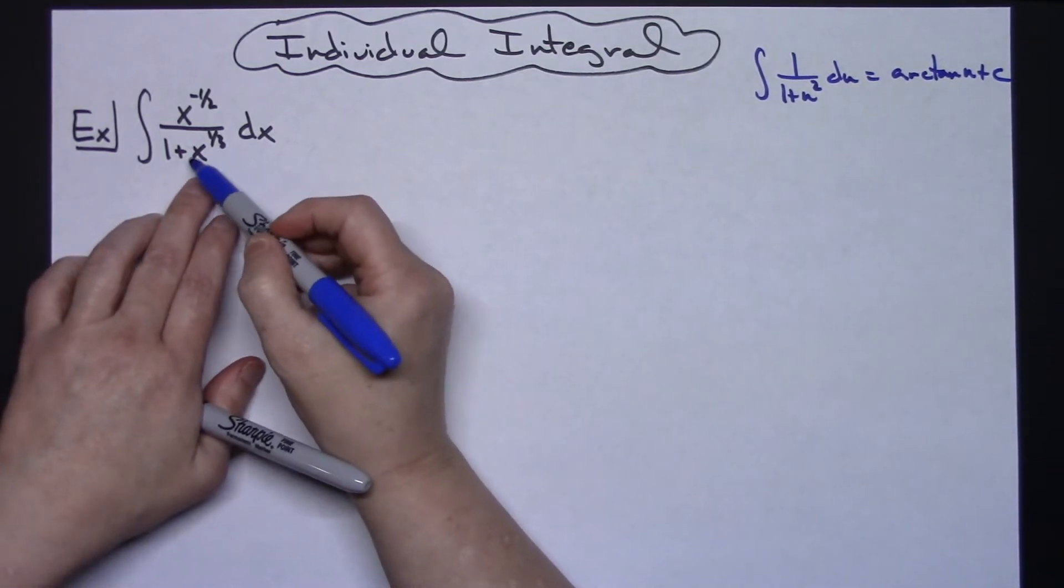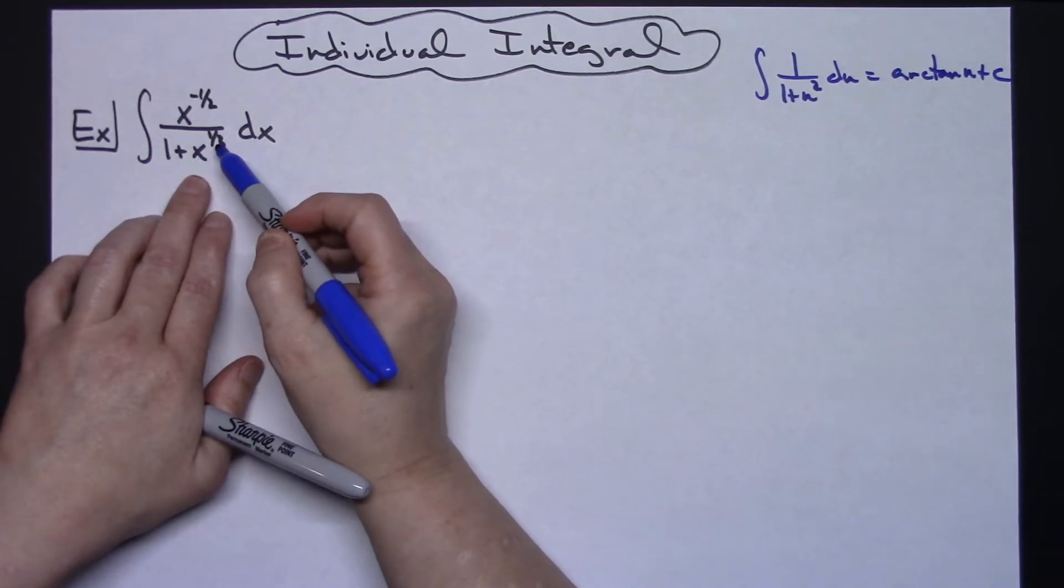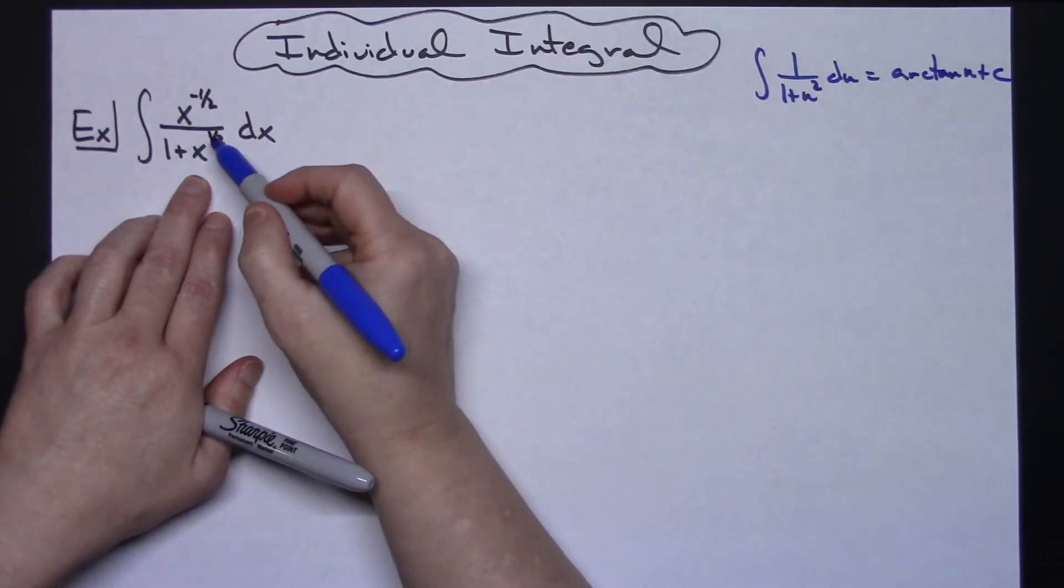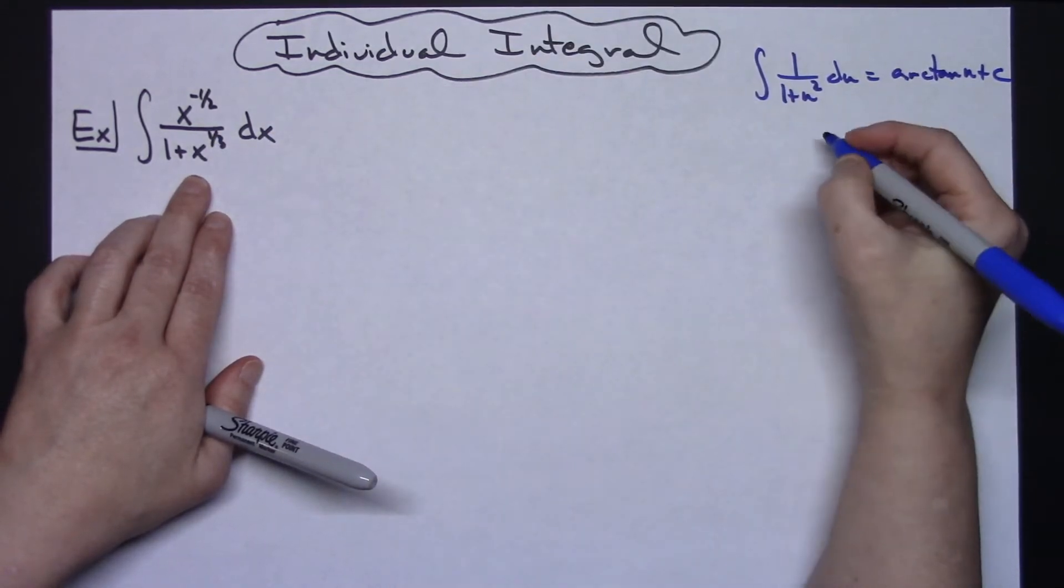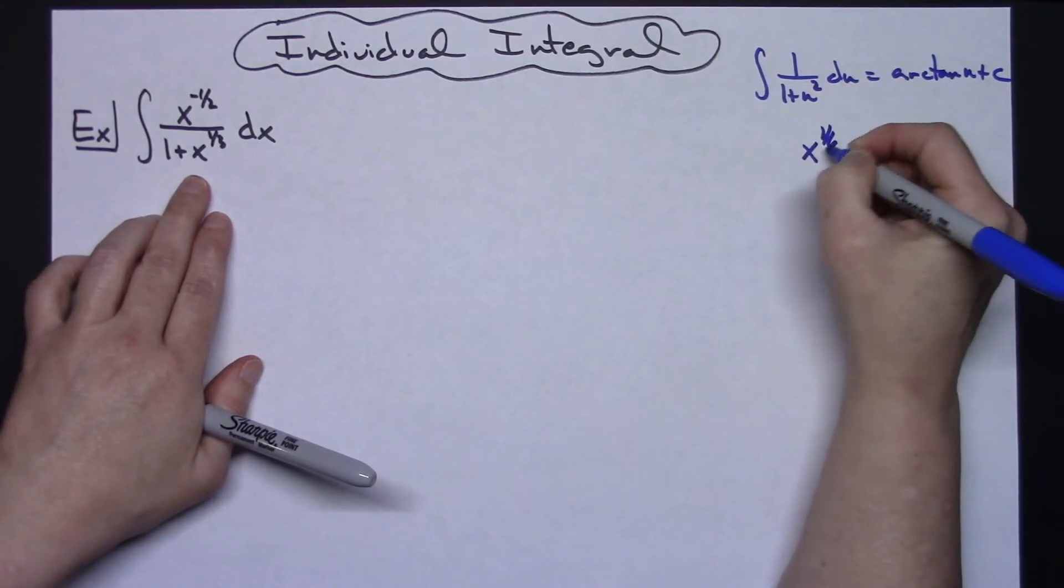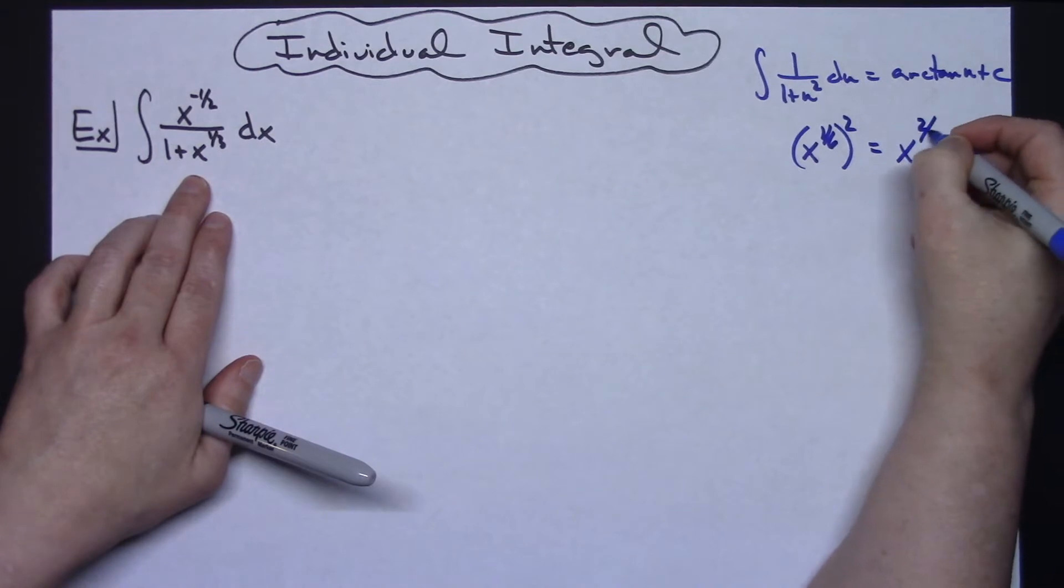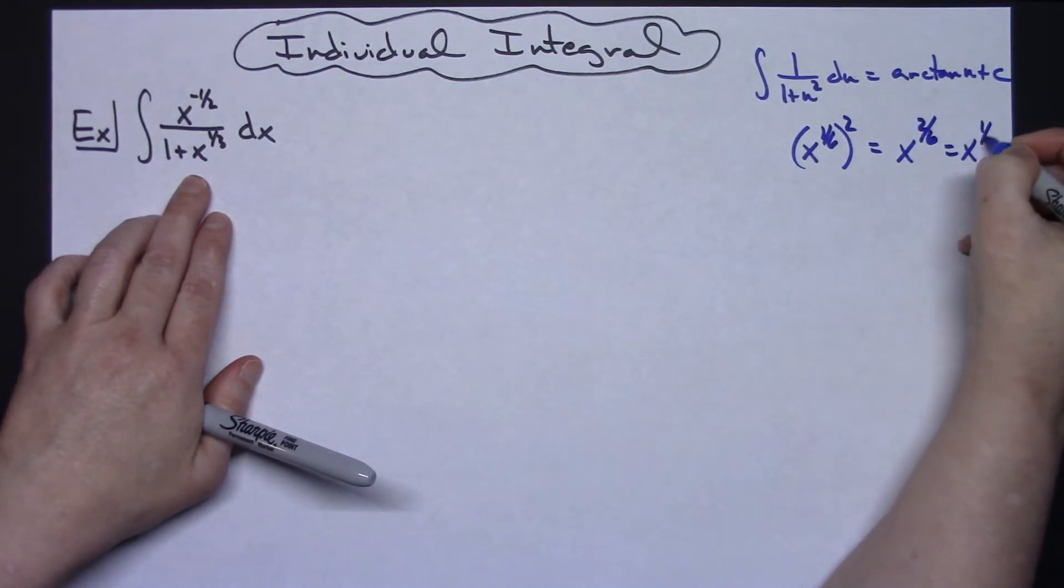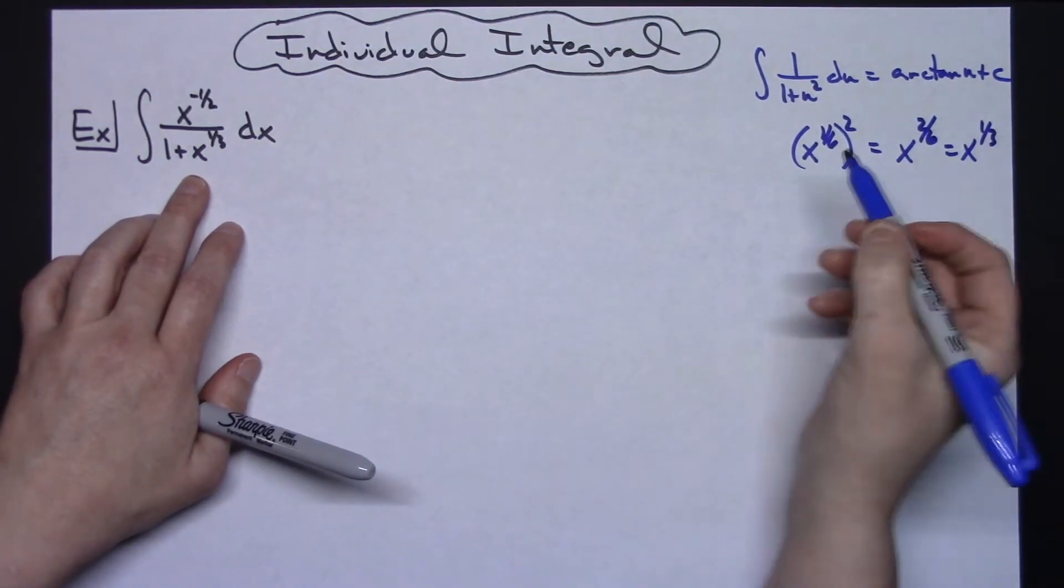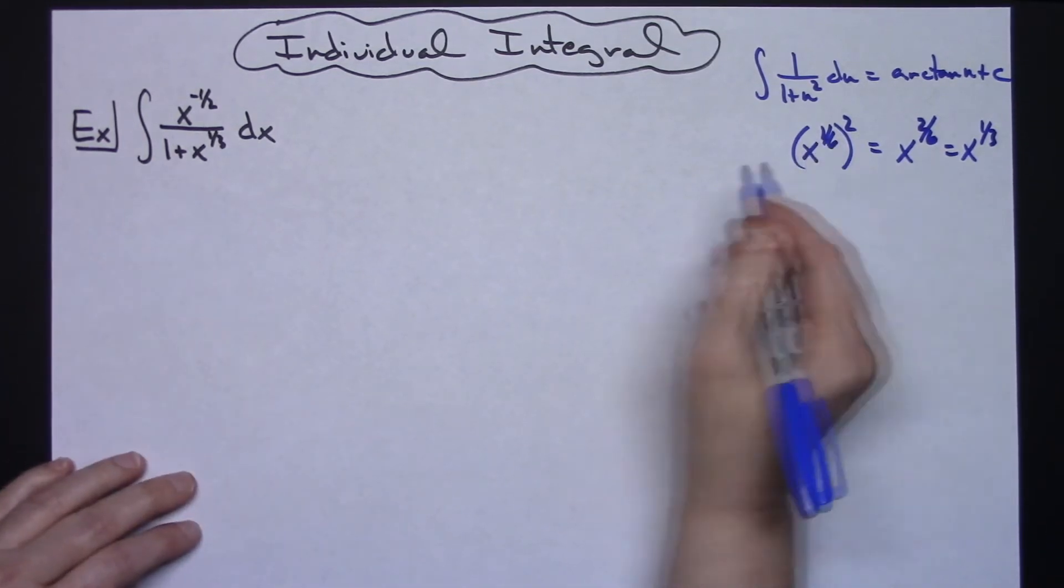So then the next thing you've got to think about is, what can I let x be raised to the one-third power, and what power am I going to get when I square it to get that one-third? So if you take a look at x to the one-sixth and then square it, that's going to give me x to the two-sixths, which is x to the one-third, which is what I need it to be. So there's where I'm going to start with my u.